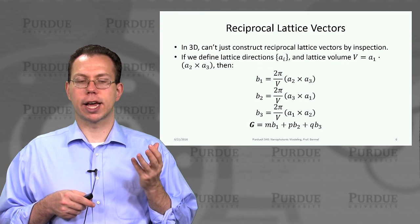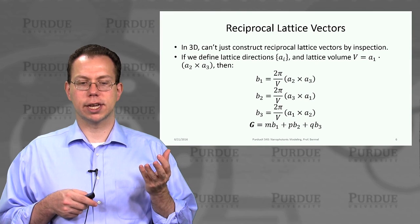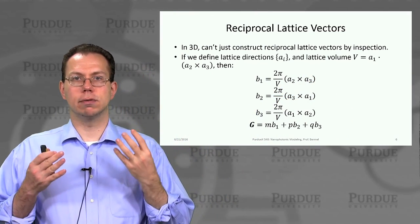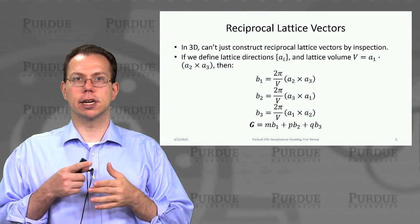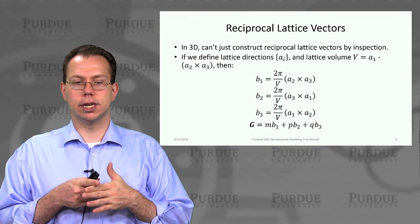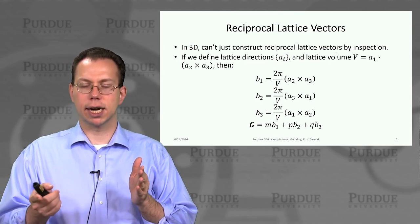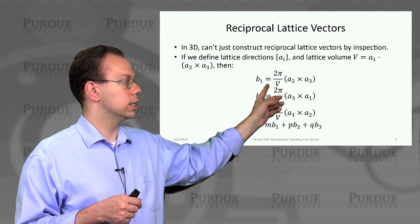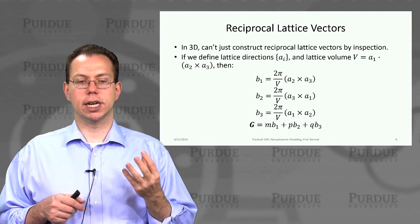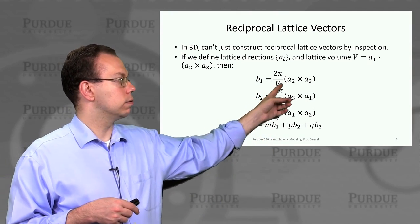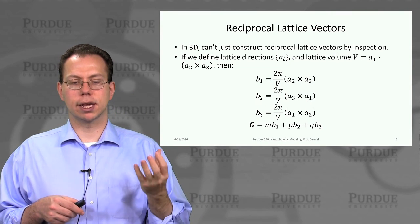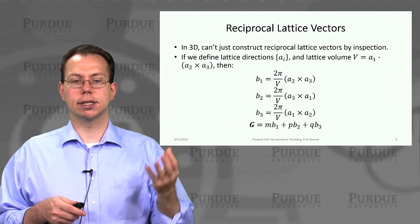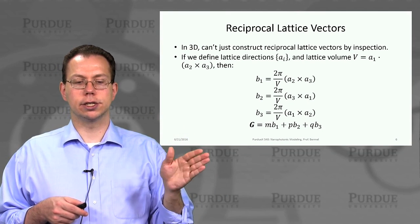One key challenge with reciprocal lattice vectors in 3-D is that you can't just look at the structure and figure out what they are — there's a set of formulas to use. First, calculate the real-space lattice volume V, which is the triple product of the elementary unit vectors A1, A2, A3. Then the reciprocal lattice elementary components B1, B2, B3 are cross products of the other two components: B1 equals A2 cross A3 times 2 pi over V; B2 equals A3 cross A1 times 2 pi over V; B3 equals A1 cross A2 times 2 pi over V. You then add integer multiples of each of these elementary units to form the full reciprocal lattice vector G.